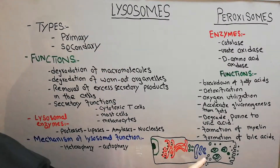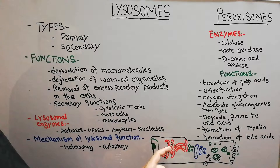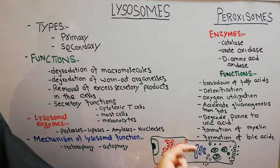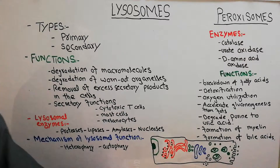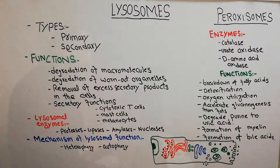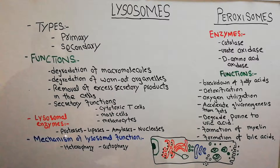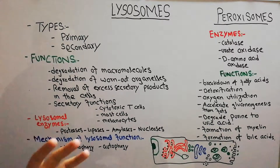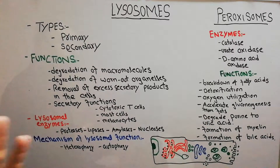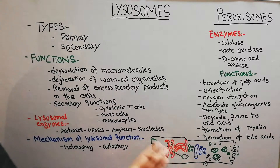Now, peroxisomes: unlike lysosomes, which come from the Golgi apparatus, peroxisomes come directly from the endoplasmic reticulum — they are not packed through the Golgi apparatus. Their functions are also different: the enzymes present in peroxisomes are oxidases, which oxidize different substances rather than hydrolyzing them.